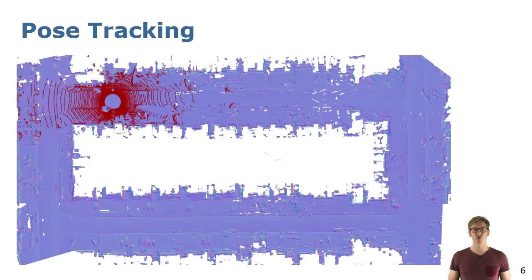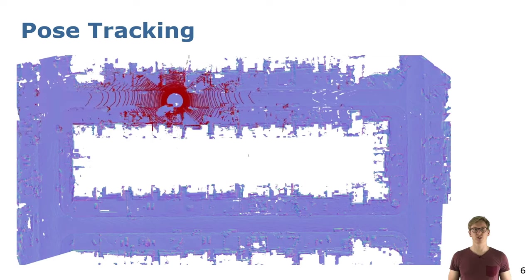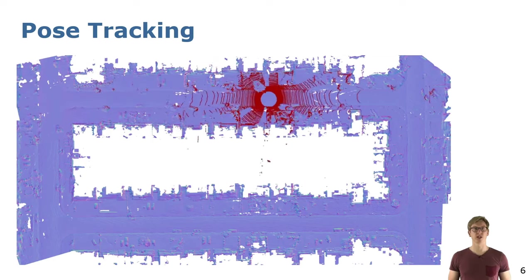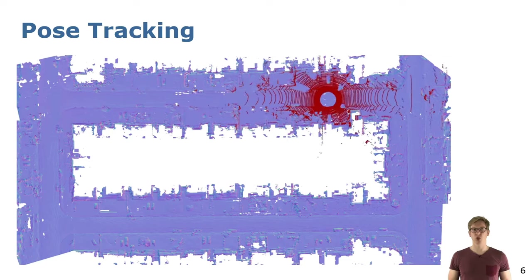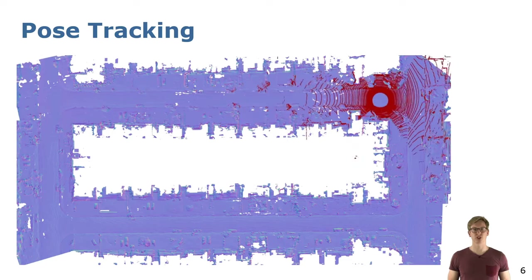Now we can register to our scene using a point-to-neural distance field ICP, quite similar to the ones used in RGBD SLAM. By this, we are able to reliably track the position of our vehicle.